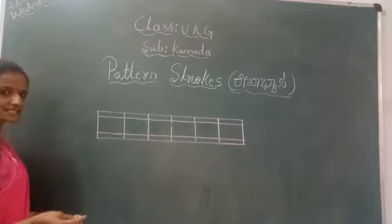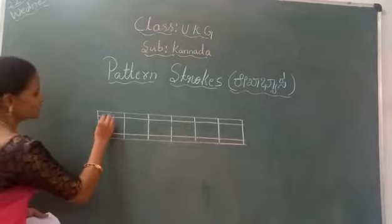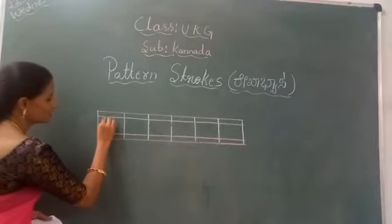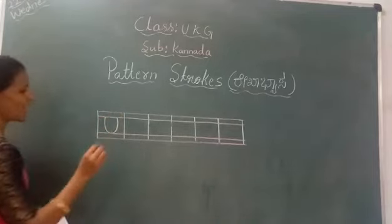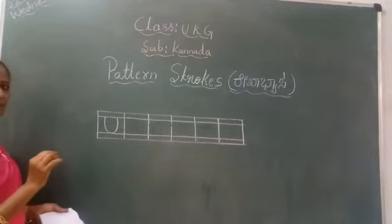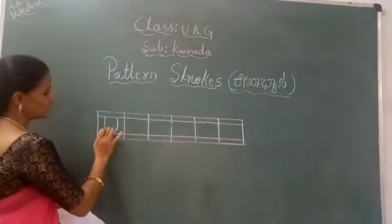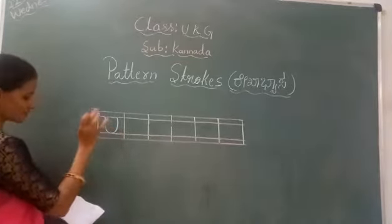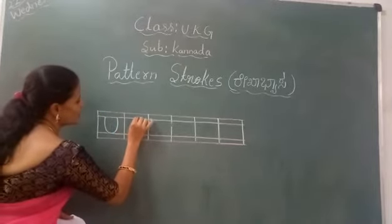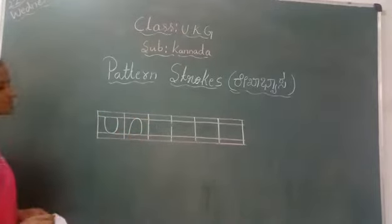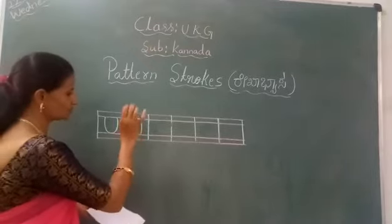Okay, let me start children. First pattern — U, like this. Already you have written it, in English alphabet, U. So like this. First pattern. Second pattern is opposite U.